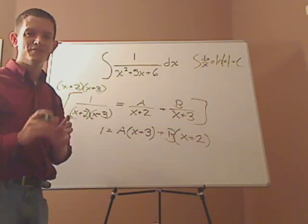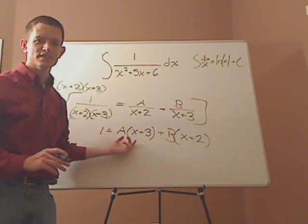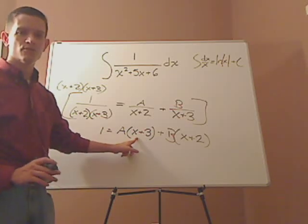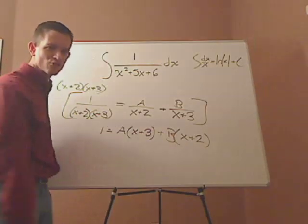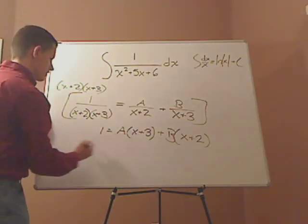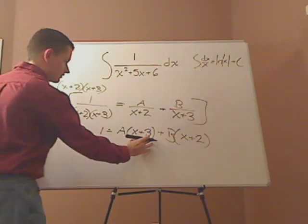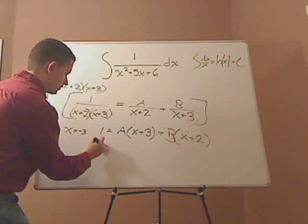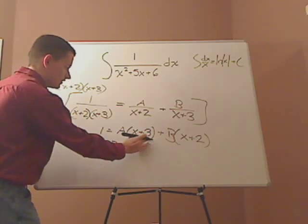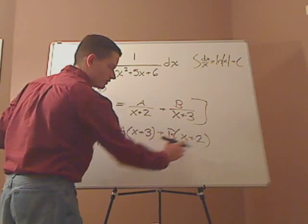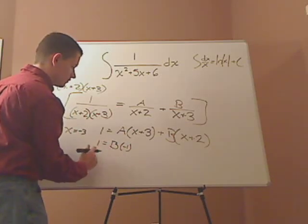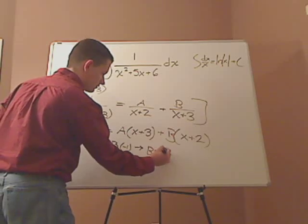Now this is very easy because basically you can plug in any number you want for x. What I would do is make this zero, or make this one zero. It's really helpful since they're different here. I can plug in x equals negative 3, that will cancel this out. So I'm left with 1 equals B, negative 3 plus 2 gives me negative 1. I get B all by itself, B equals negative 1.